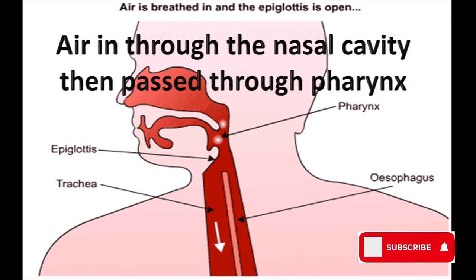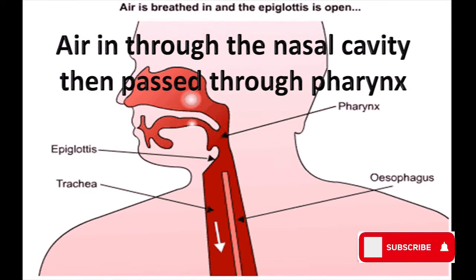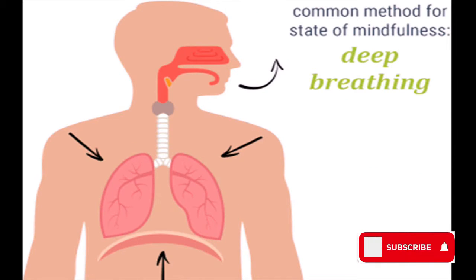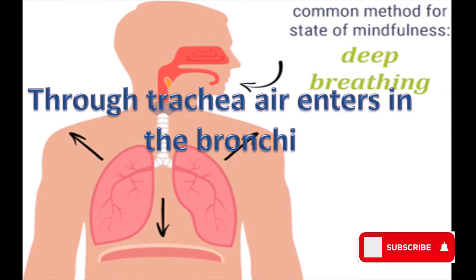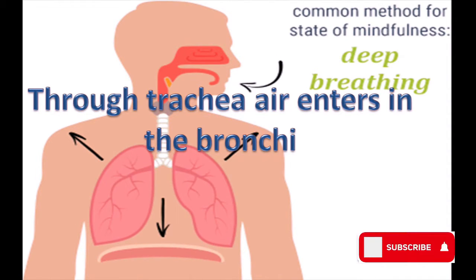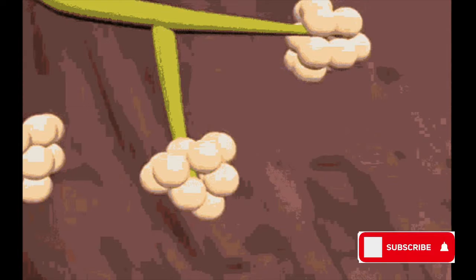Air enters through the nasal cavity, then passes through the pharynx. The diaphragm closes the food pipe and the air passes through the windpipe. Through the trachea or windpipe, air enters into the bronchi.